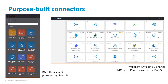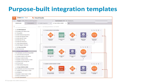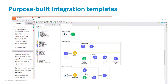Generic connectors enable you to connect to any system that has an API or standards-based connectivity. Integration templates provided out-of-the-box are purpose-built solutions that connect specific application objects, like a BMC Helix Operations Management event to a ServiceNow incident, or a BMC Helix Digital Workplace request with a Jira issue.